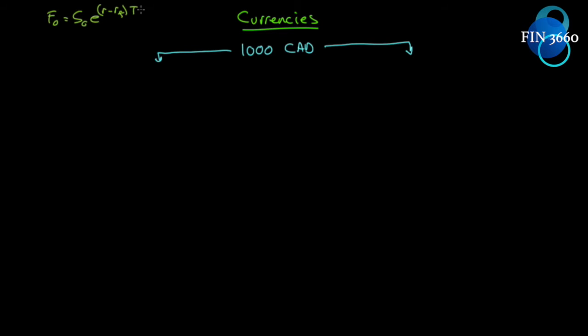What we have to do is set up two scenarios and argue that those two scenarios must be equal, otherwise there's an arbitrage opportunity. We're going to convert a thousand Canadian dollars into US dollars, and no matter which way we convert it, they must be identical — otherwise we have an arbitrage opportunity.